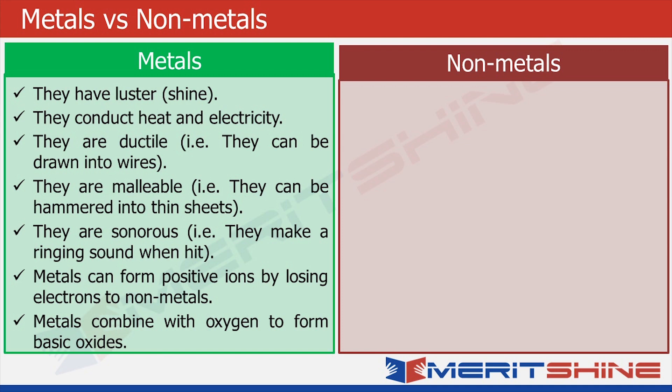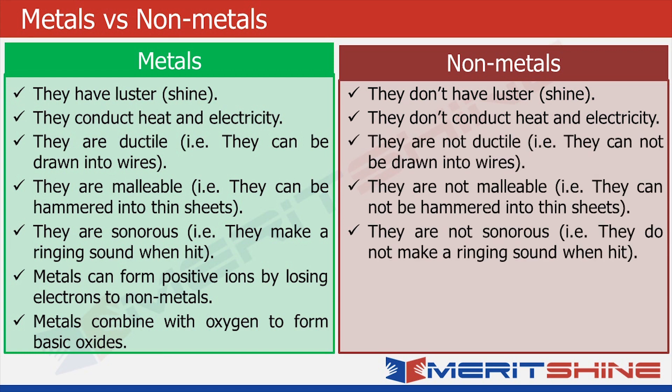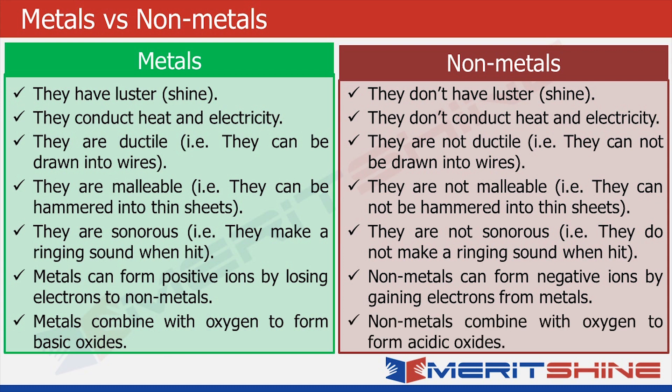Now if you look at non-metals, they do not have luster, they do not conduct heat and electricity, they are not ductile, they are not malleable, they are not sonorous. Also, unlike metals, non-metals form acidic oxides. Please note, they are the broad properties of metals and non-metals.